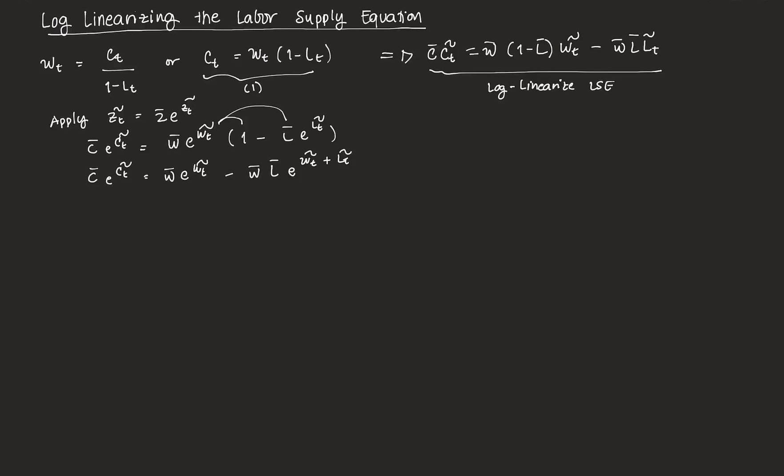Then what we can do is we can further simplify this form. So if you recall, according to Ulig 1999, we can simplify a form, say, Z bar E Zt tilde. That's just equal to 1.